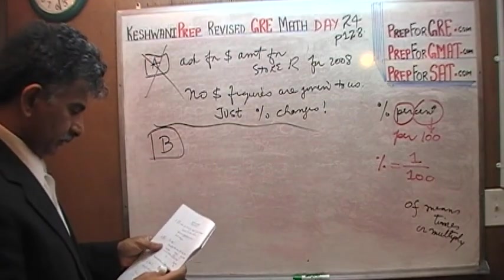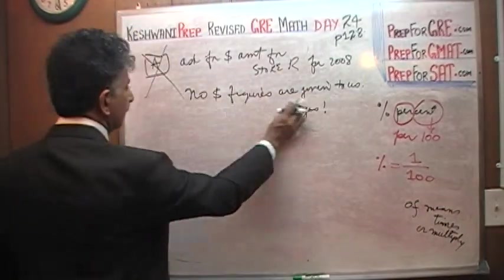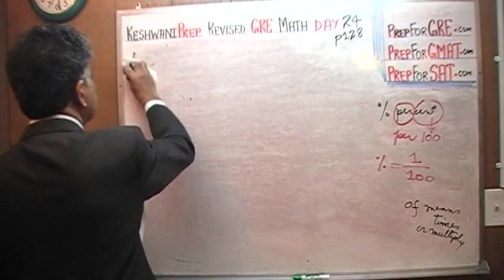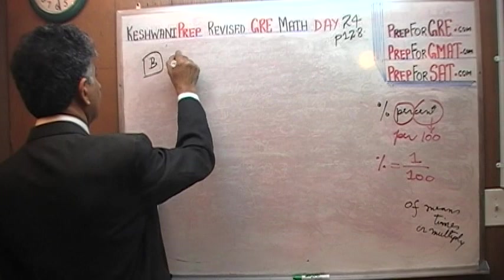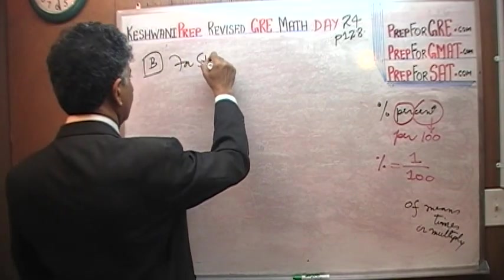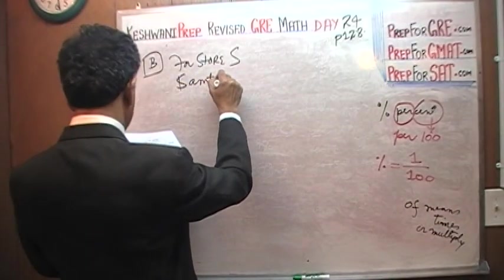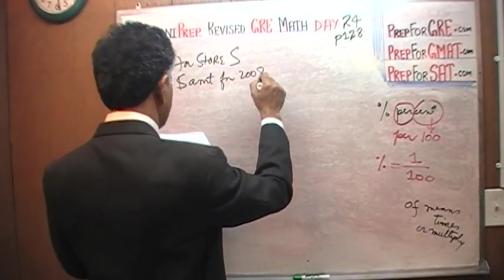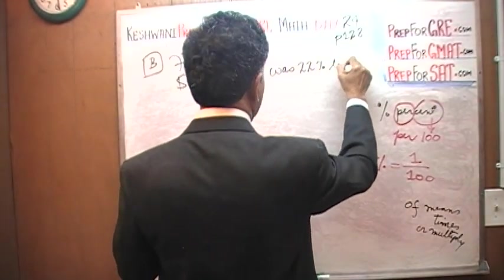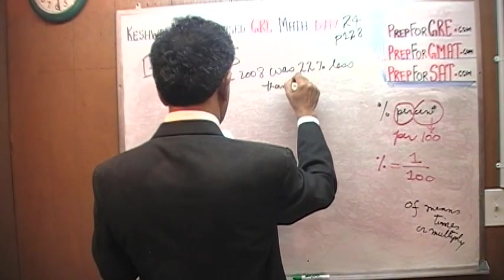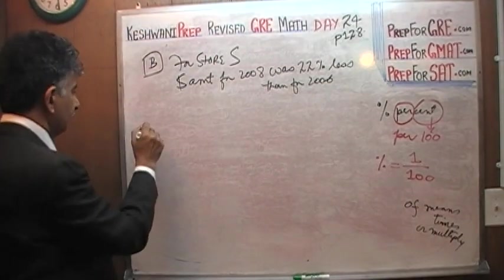B says, let's do the B separately. A is wrong. A does not work. B says for store S, dollar amount for 2008 was 22% less than for 2006. Let's see if this is true. So here is the 2006.